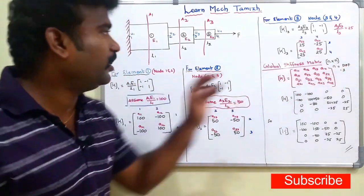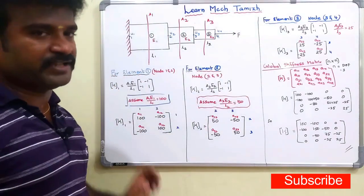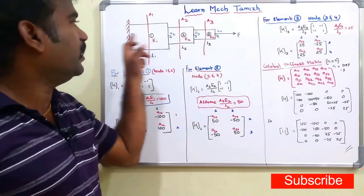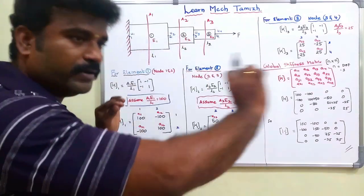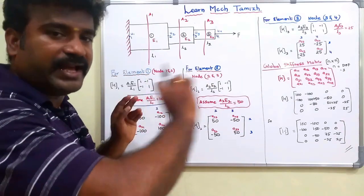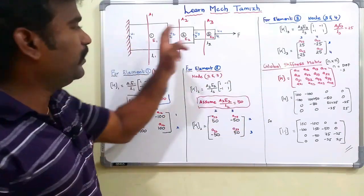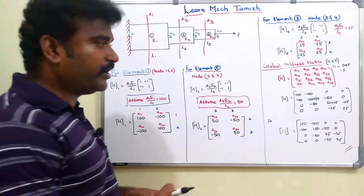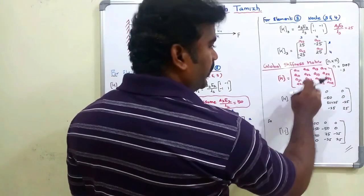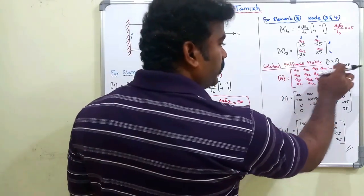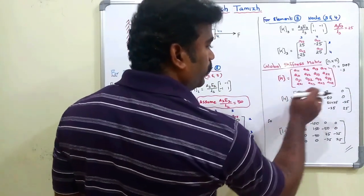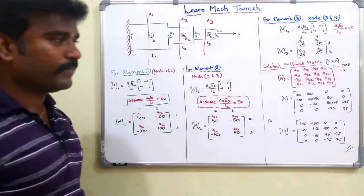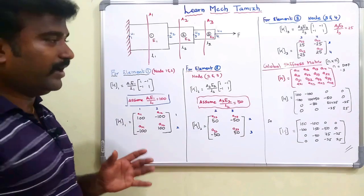What is the global stiffness matrix? It is the assembled stiffness matrix of all elements. With 4 nodes and one degree of freedom per node, there are 4 degrees of freedom and the global matrix is 4×4. The components are indexed from (1,1) to (4,4): positions (1,1), (1,2), (1,3), (1,4); (2,1), (2,2), (2,3), (2,4); (3,1), (3,2), (3,3), (3,4); (4,1), (4,2), (4,3), (4,4). Now we will assemble this.